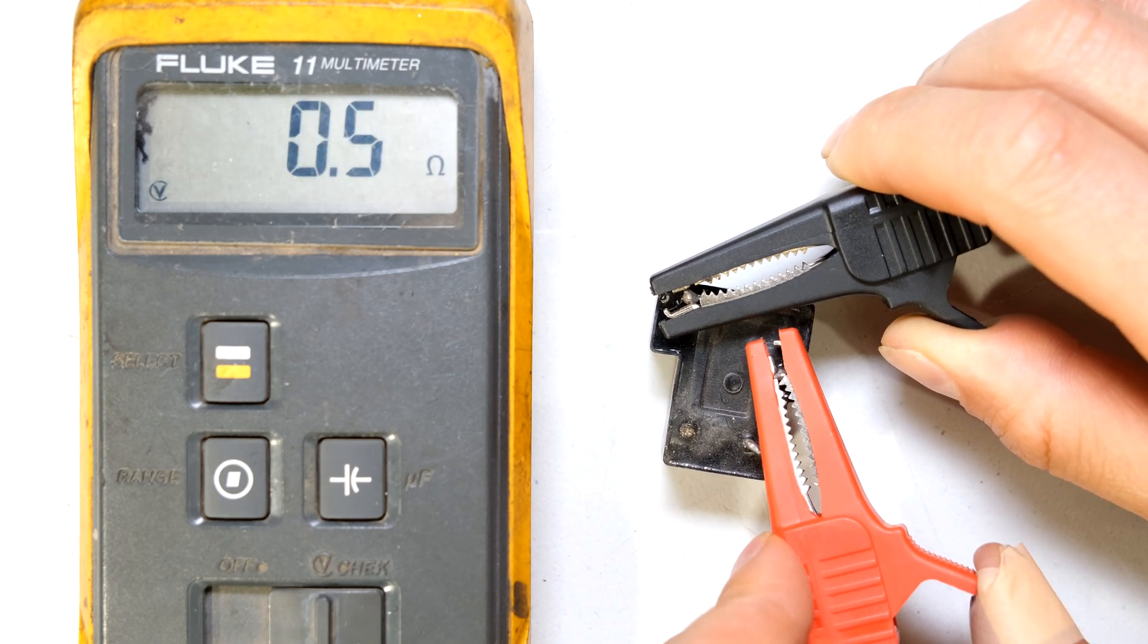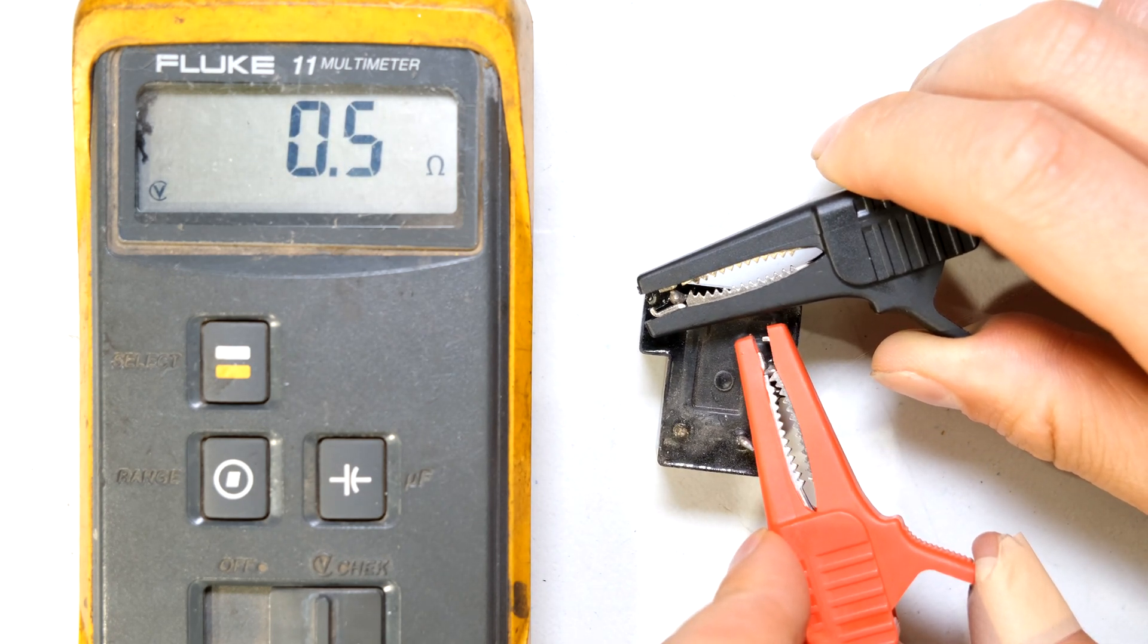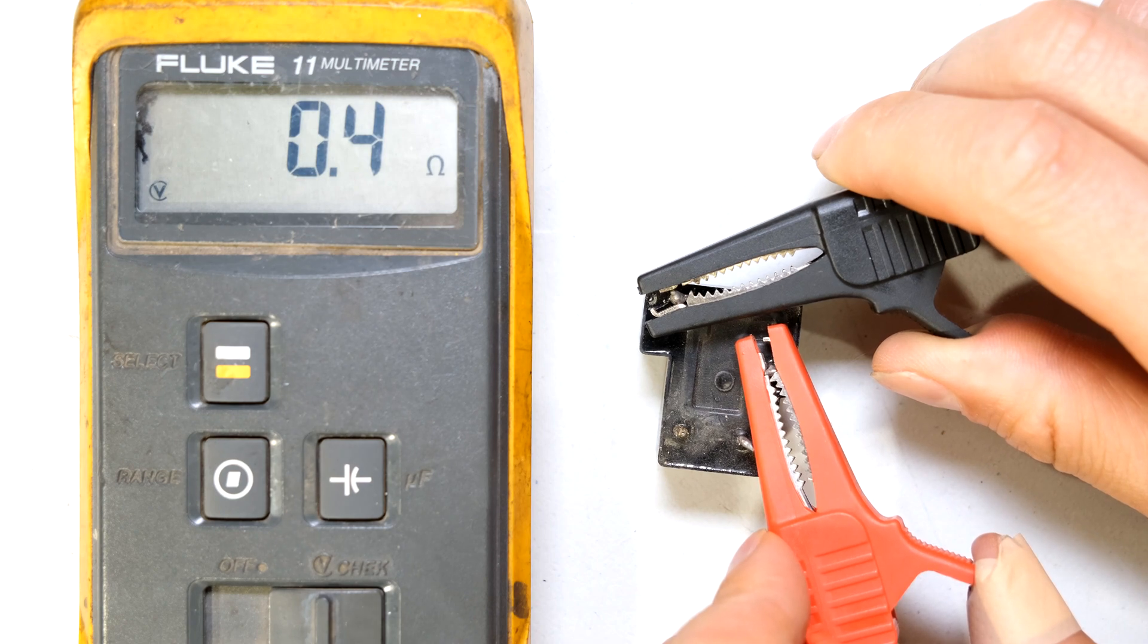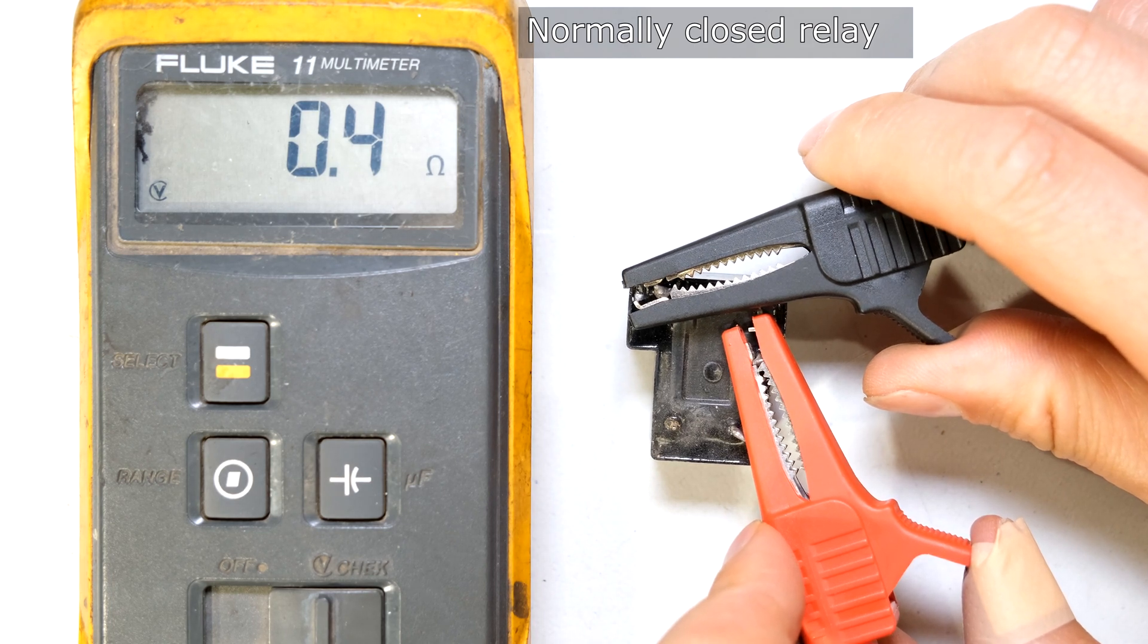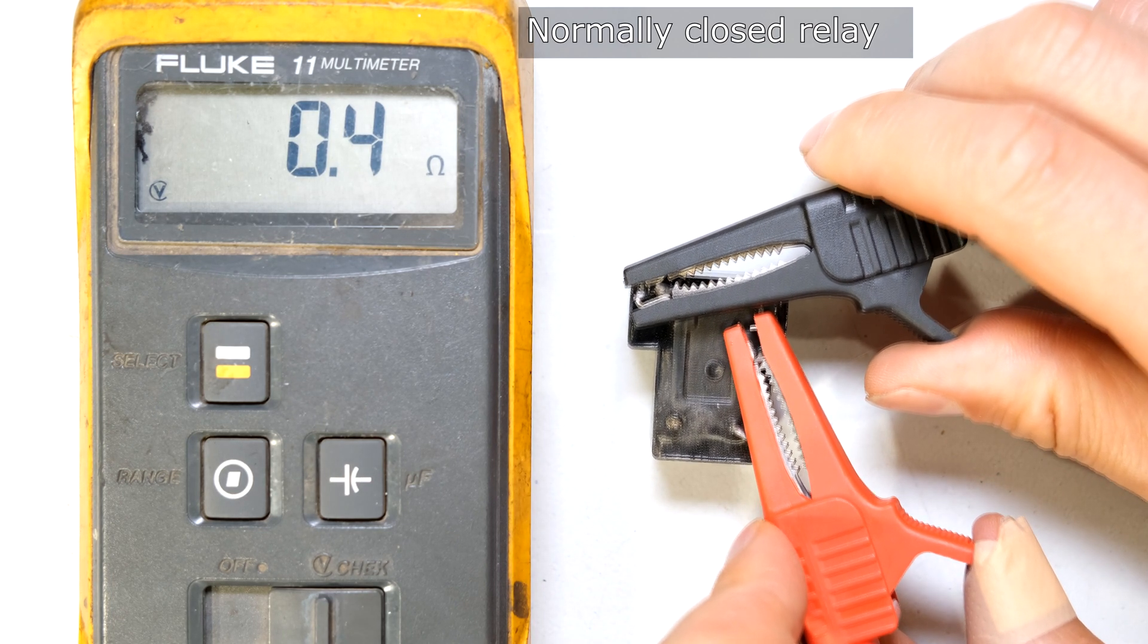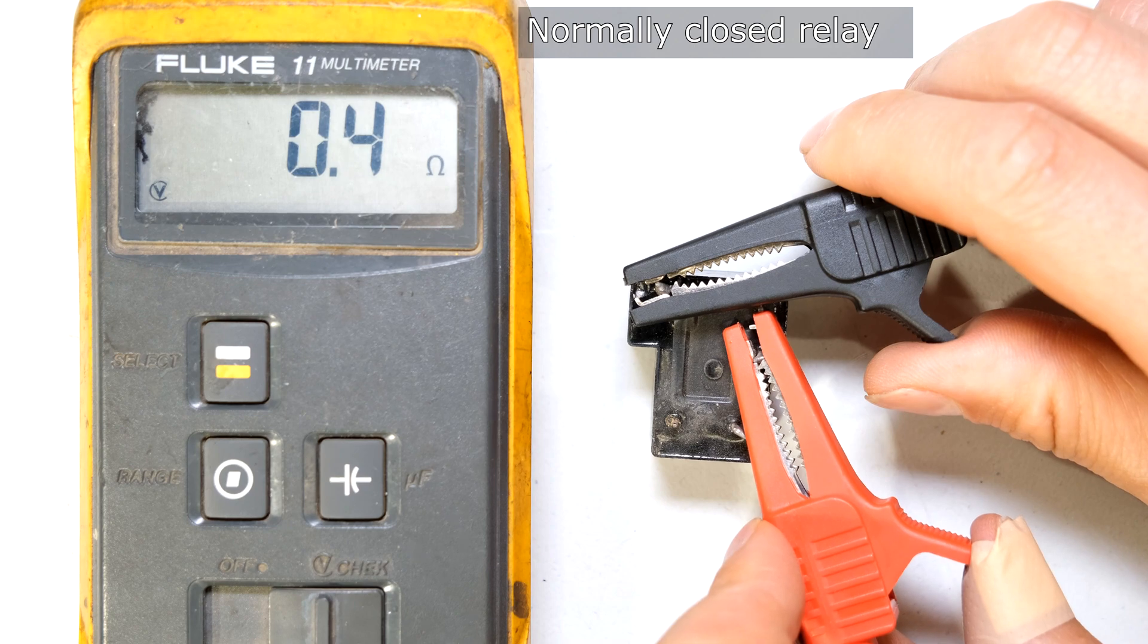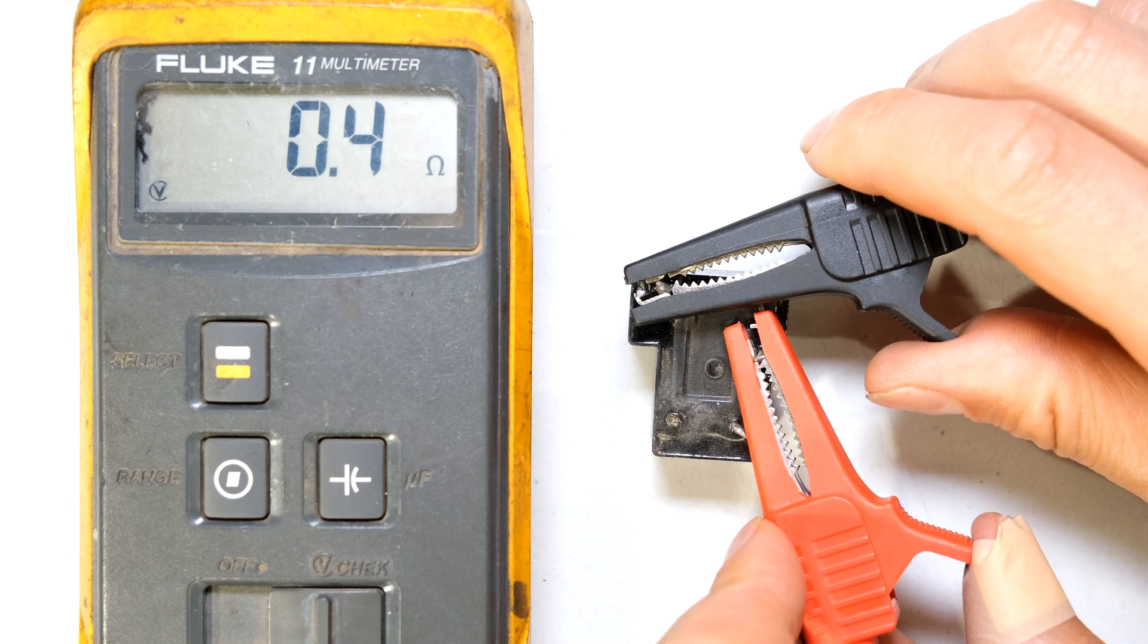But hang on. Look at that. Between these two terminals I'm getting a very low resistance. So that could not be the coil. That is because this is a normally closed terminal for this relay. As you can see it says 0.4 ohms. That cannot be the coil resistance. It's far too low. This is a contactor that has closed.